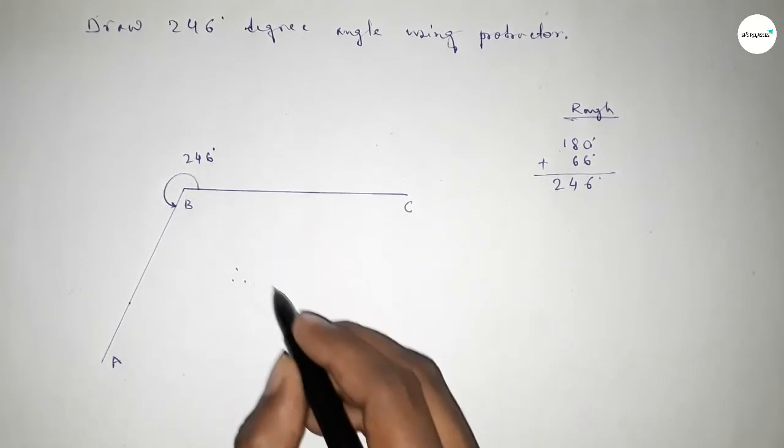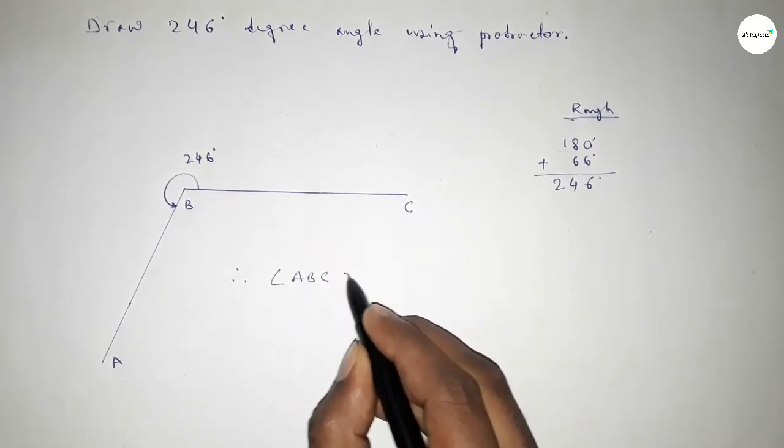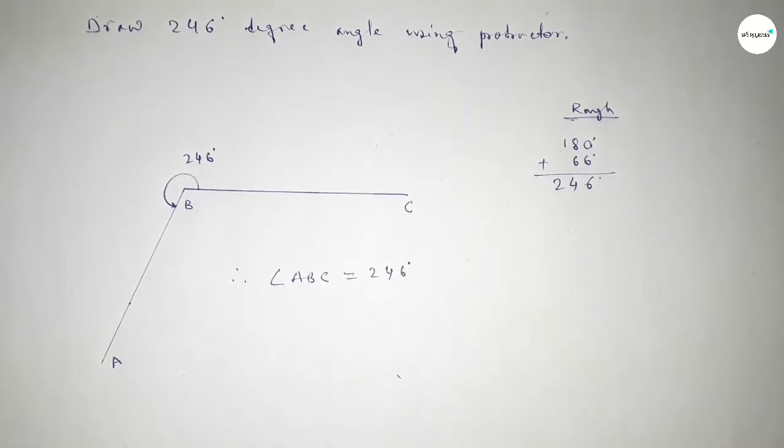Therefore, angle ABC equals 246 degrees. That's all, thanks for watching.